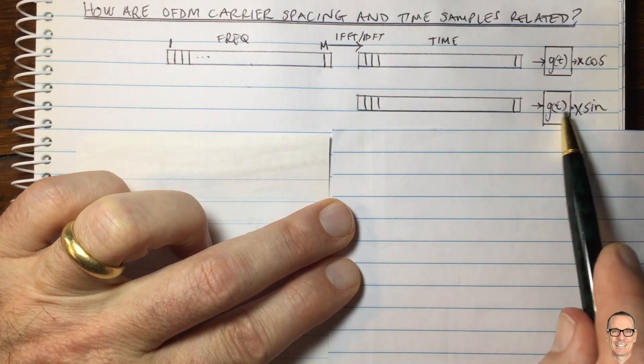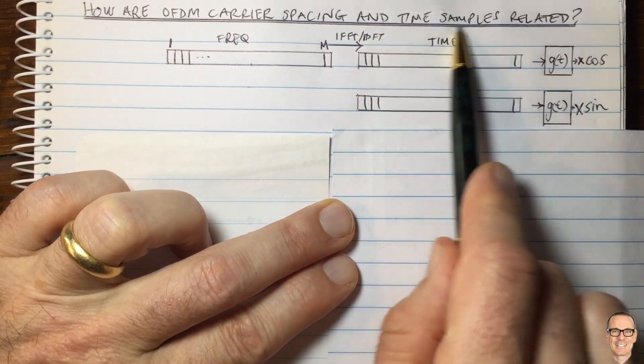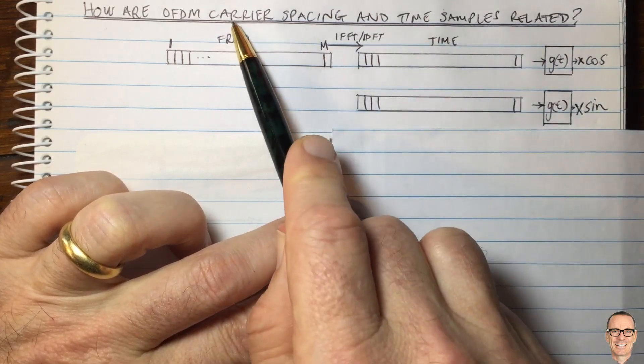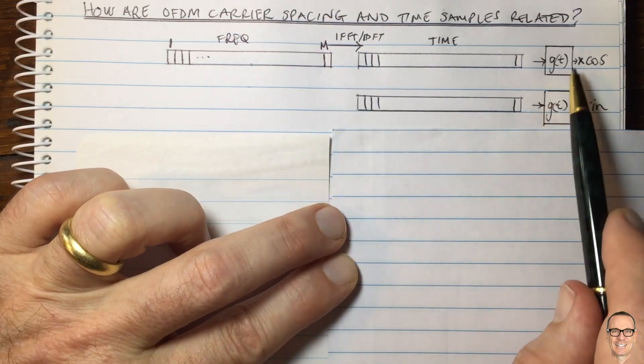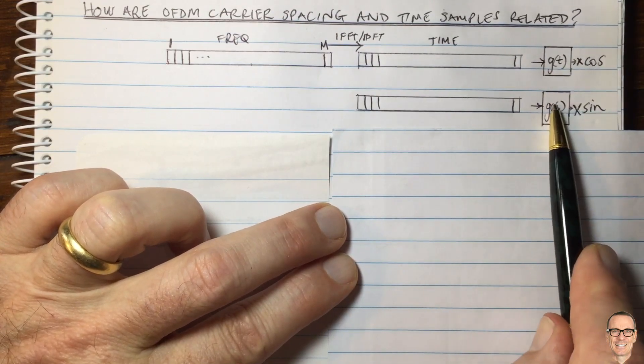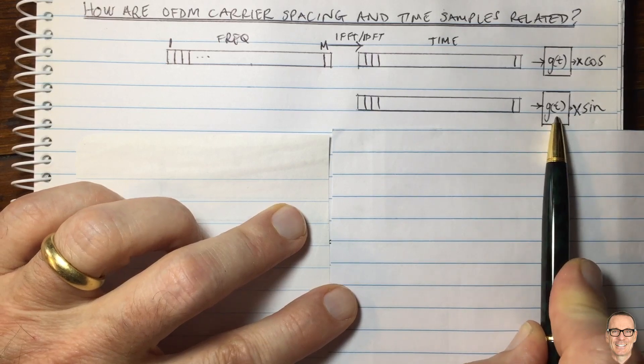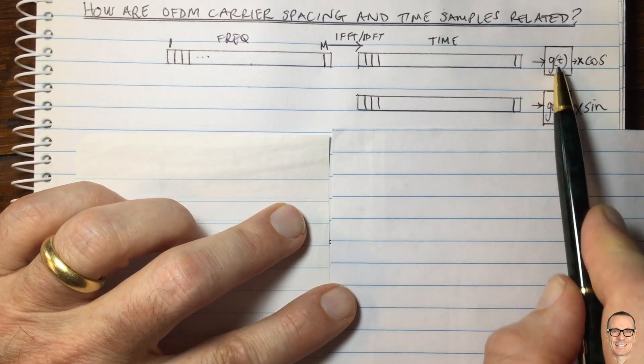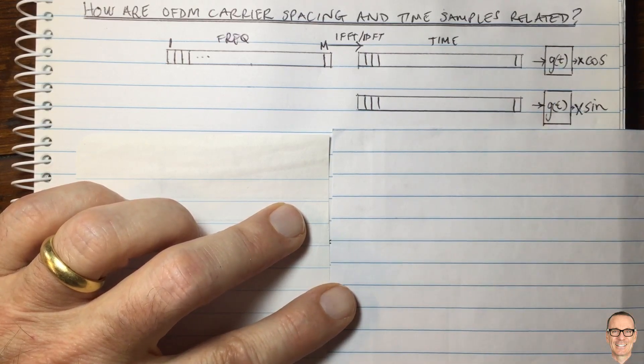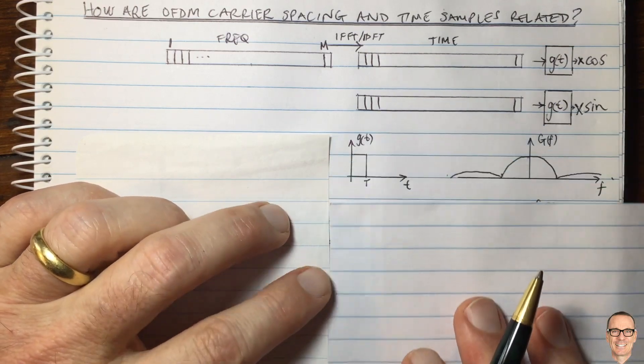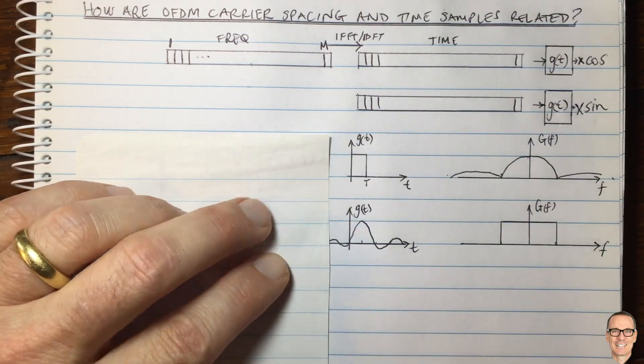What is this filter here? This is the important thing about the time samples, linking the time samples to the carrier spacing. This is a pulse shaping filter. More information on pulse shaping filters, look in the description below. Let's look at two particular types of pulse shaping filters that we might choose.